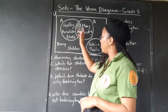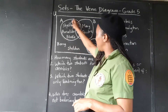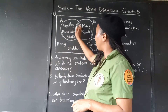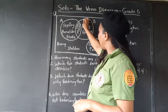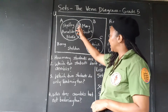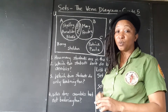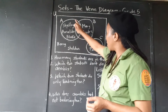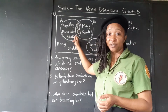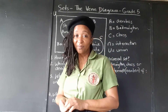Everybody in the circle marked A — Shelby, Ronaldo, Blake, Lizzie, and Marsha — all of them do aerobics. Everybody in the B circle does badminton. Two students do both badminton and aerobics: where the aerobics overlaps the badminton, we have Lizzie and Marsha. They do aerobics and badminton, well hopefully on different days of the week.